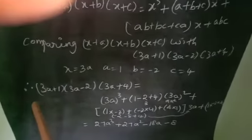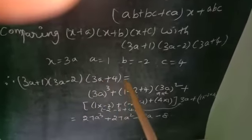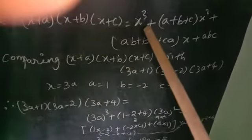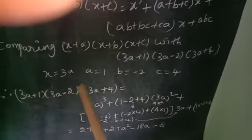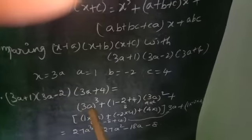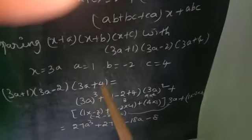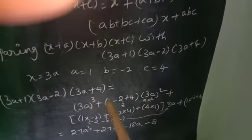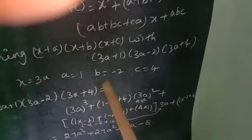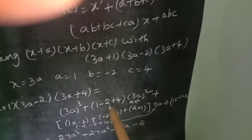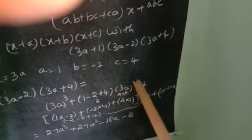Therefore, 3a plus 1 into 3a minus 2 into 3a plus 4 equals: x cube becomes 3a the whole cube. Then a plus b plus c is 1 minus 2 plus 4 into x square, which is 3a whole square. So that gives 3 into 9a square.